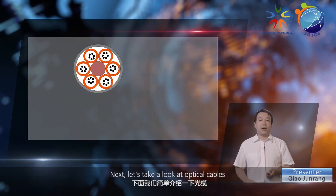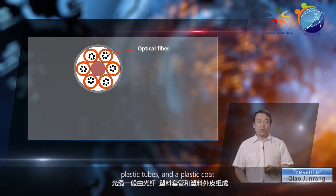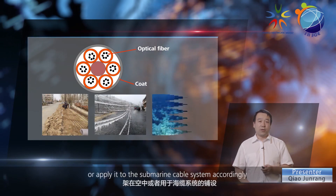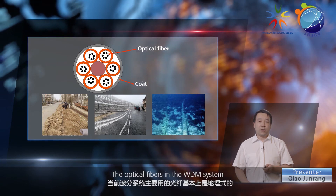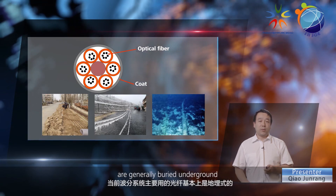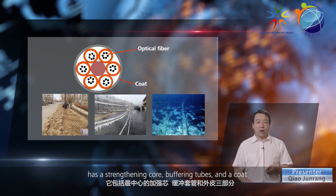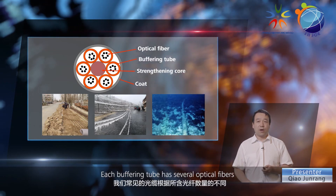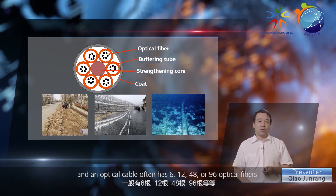Next, let's take a look at optical cables. An optical cable is often composed of optical fibers, plastic tubes, and a plastic coat. We can bury it underground, hold it in the air, or apply it to the submarine cable system accordingly. Optical fibers in a WDM system are generally buried underground. A stranded loose tube optical cable has a strengthening core, buffering tubes, and a coat. Each buffering tube has several optical fibers, and an optical cable often has 6, 12, 48, or 96 optical fibers.